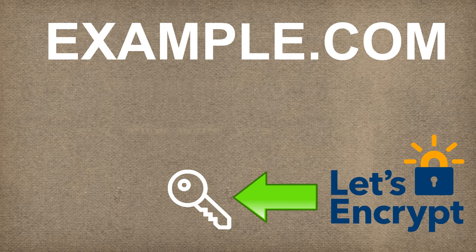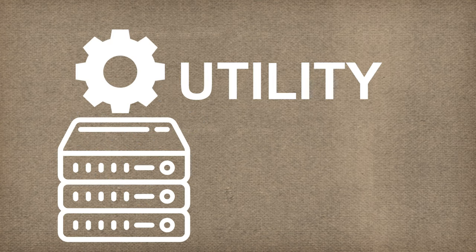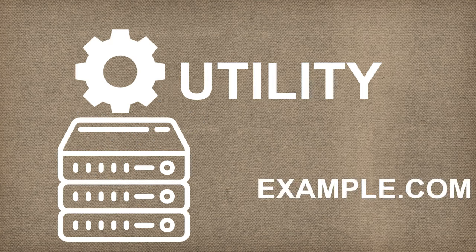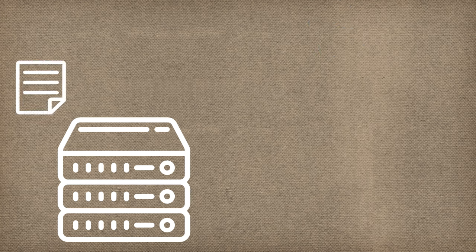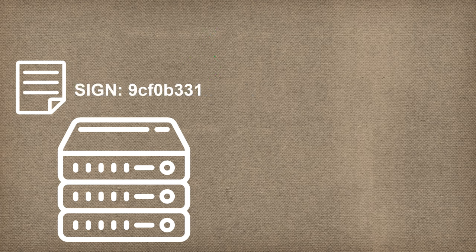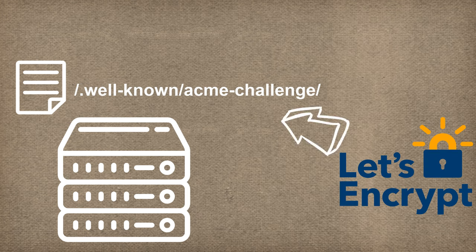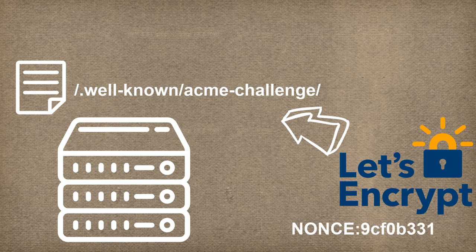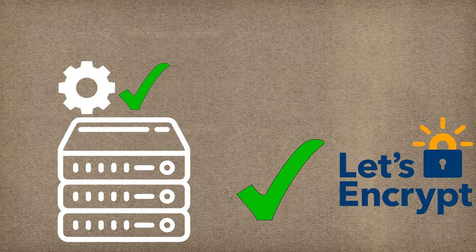To validate your domain, Let's Encrypt identifies us using a public key and asks us to complete a set of challenges. We run a utility on our web server to prove that we own it, since the domain points to it. Let's Encrypt asks us to place a file on the web server at a given path, proving we are the server admin, and we verify this by signing a nonce. Let's Encrypt makes a web request to get the file and verify the signature. Once the challenges are complete and verified by the CA, our utility identified by the key pair is authorized to do certificate management on our domain.